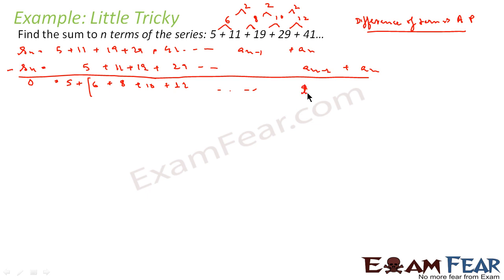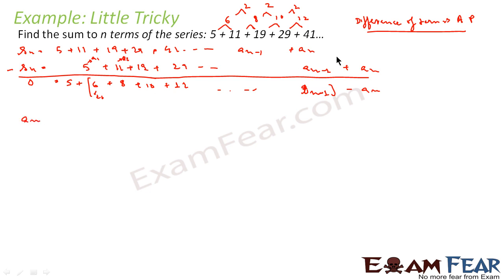After subtraction, we get that the last term on the left side is an. The right-hand side gives us tn of the new difference series minus an. Note that the first term a1 of both series matches (t1 = a1), but the last shifted term corresponds to a(n−1), which becomes t(n−1). So an = 5 + 6 + 8 + 10 + 12 + … + t(n−1).